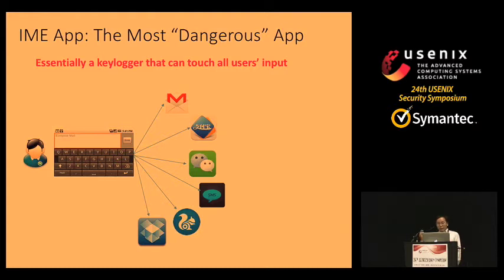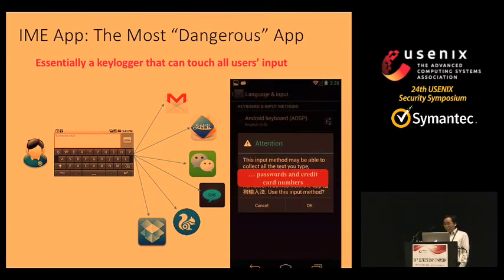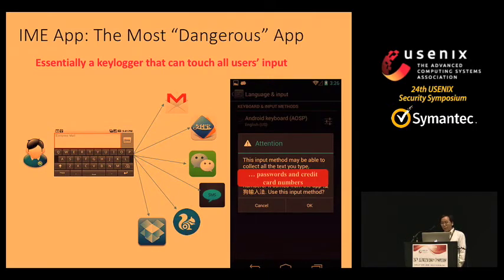IME apps are actually one of the most dangerous apps. The reason is that they can touch all your input before passing it to other apps — essentially acting as a keylogger. You might have ignored the warning generated by Android, which says that an IME app may be able to collect all the text you type, including your password and credit card number.